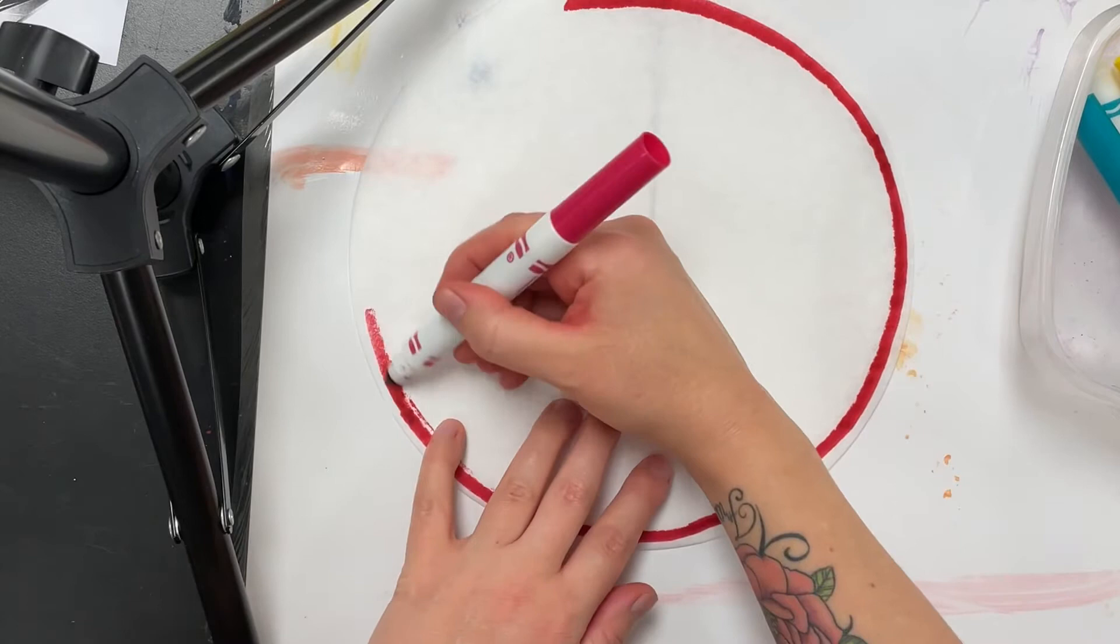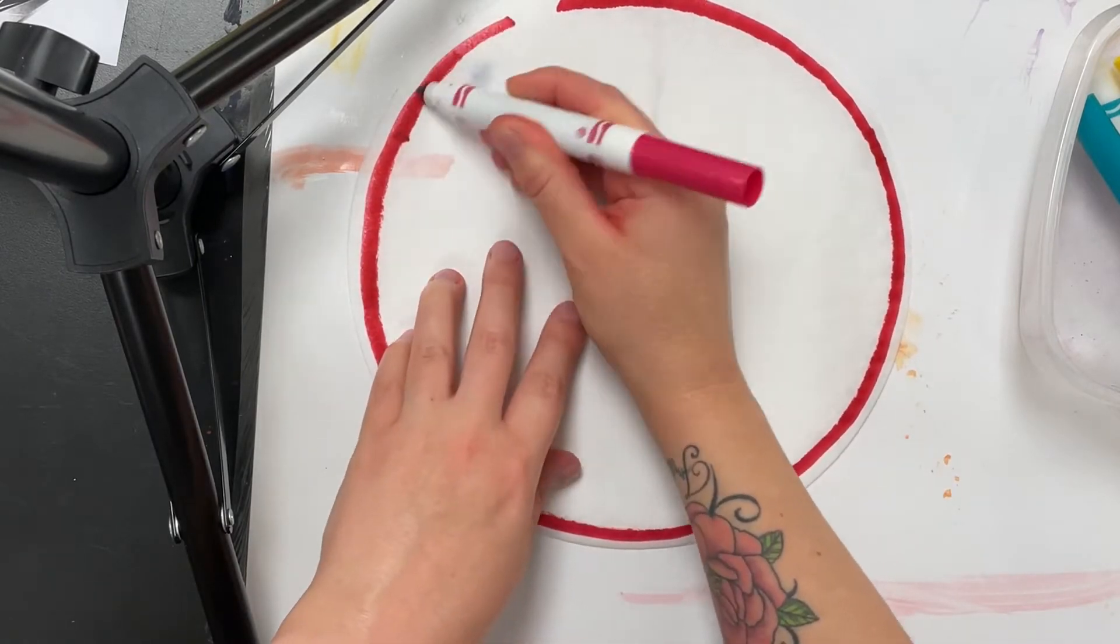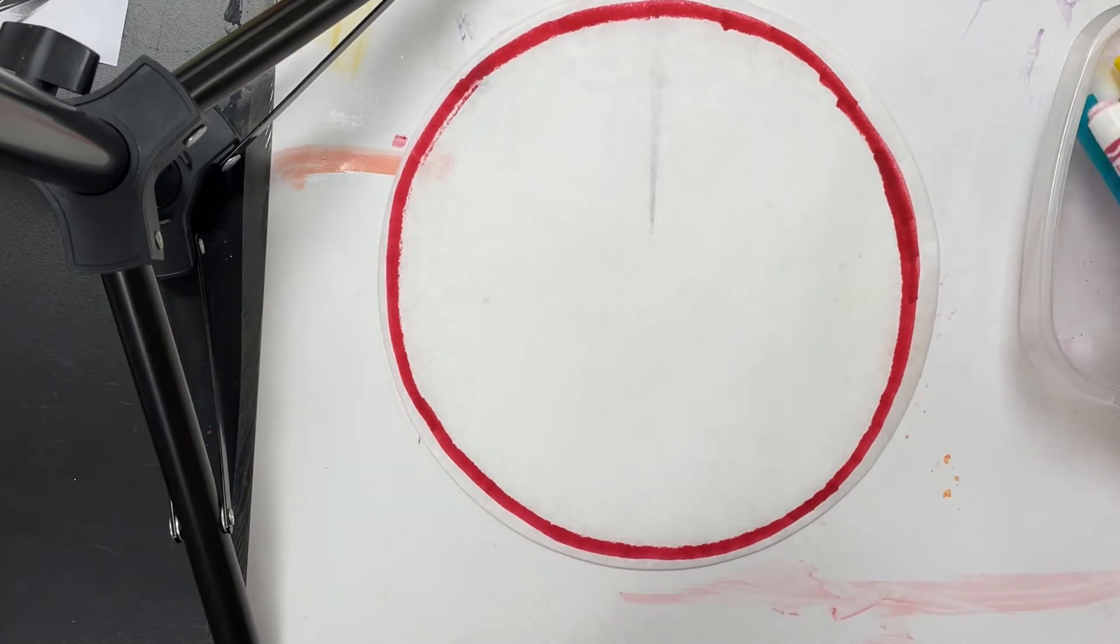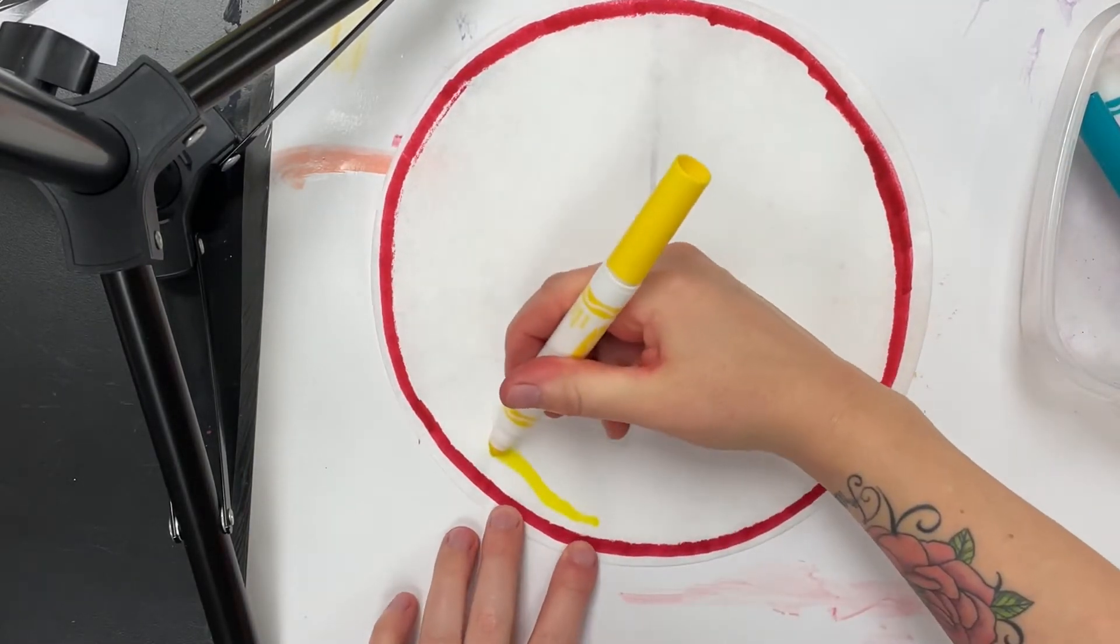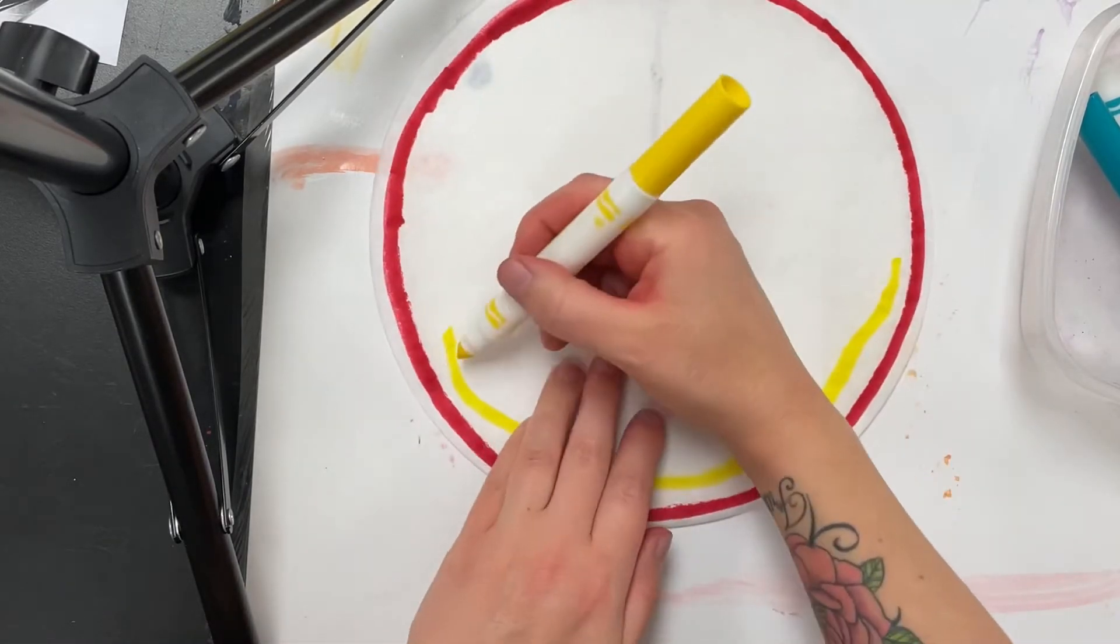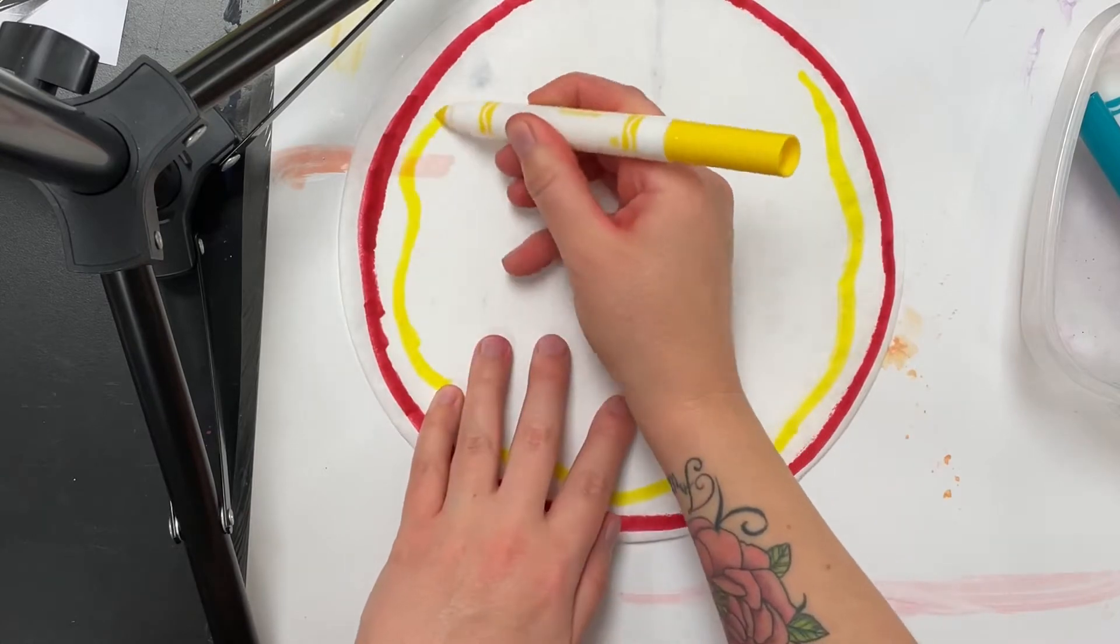You're going to draw a bunch of circles inside the circle, or circular lines. Here's my yellow - I'm going to do a wavy line all around the circle. We're going to do circles from outside to the inside.